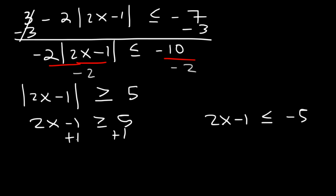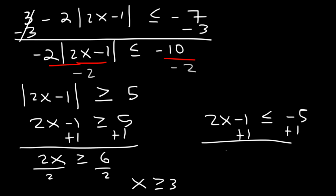So now let's add 1. So 2x is greater than or equal to 6 and next let's divide by 2. So x is equal to or greater than 3. Here we're going to add 1. So 2x is less than or equal to negative 4 and then divide by 2. So x is less than or equal to negative 2.